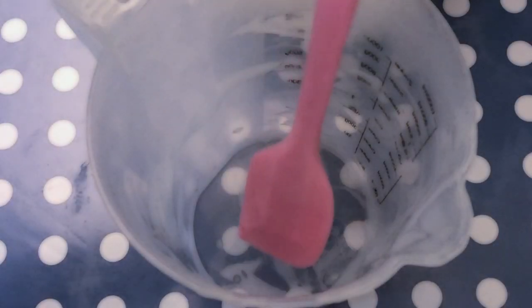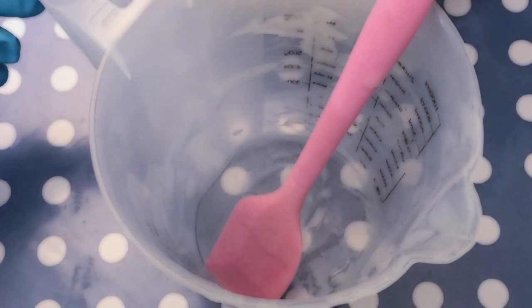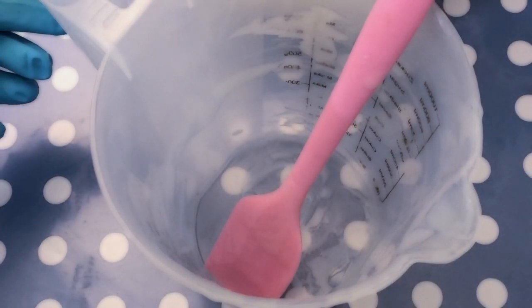You can leave the jug and the spatula that you used for soap making overnight. Then the residues will saponify and become soap and then they will be very easy to clean.